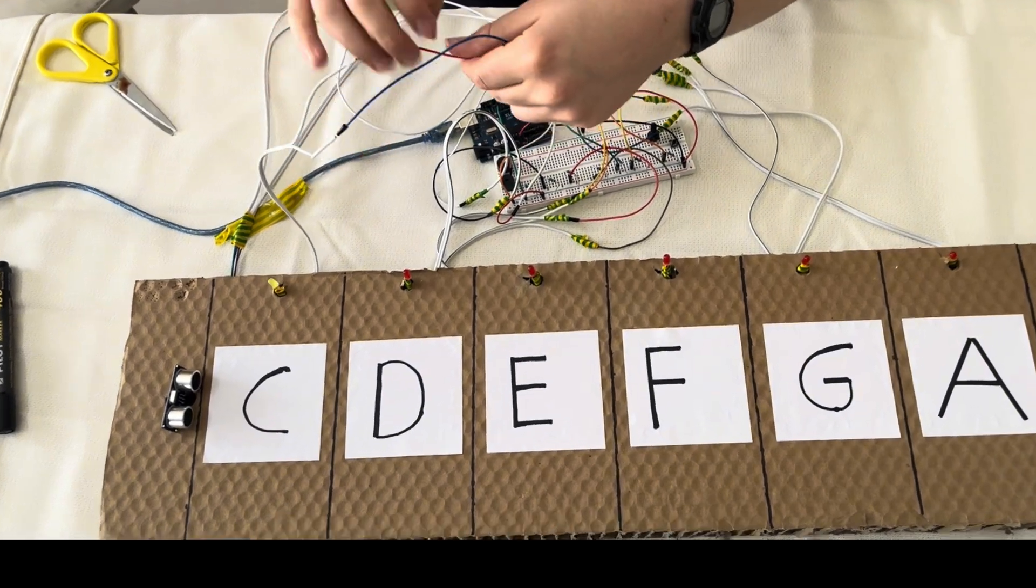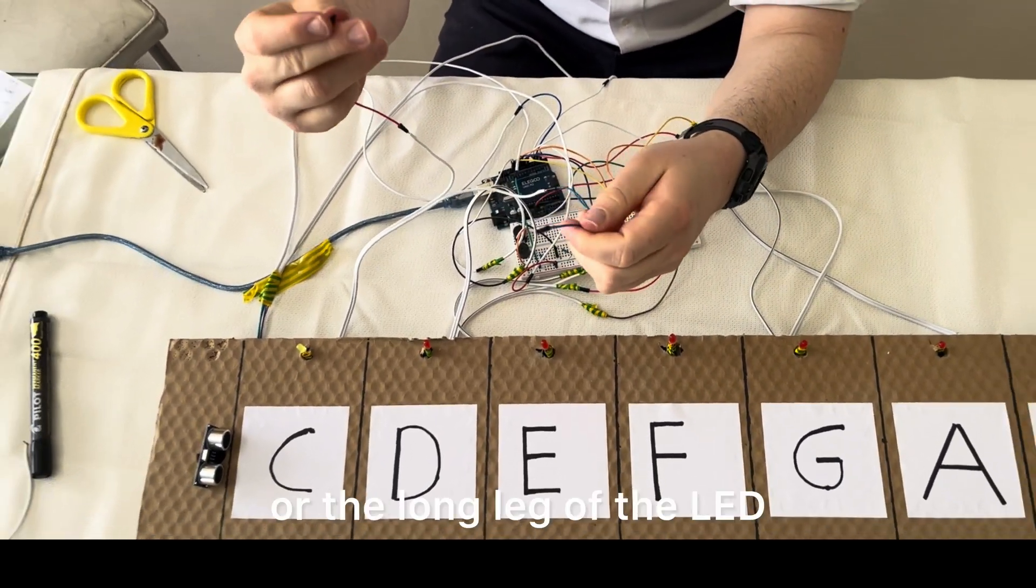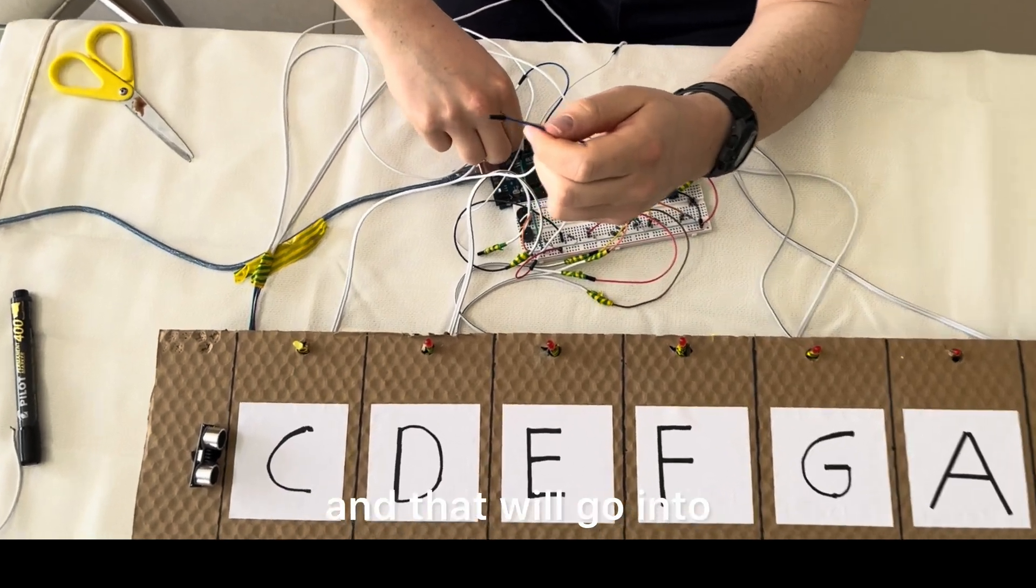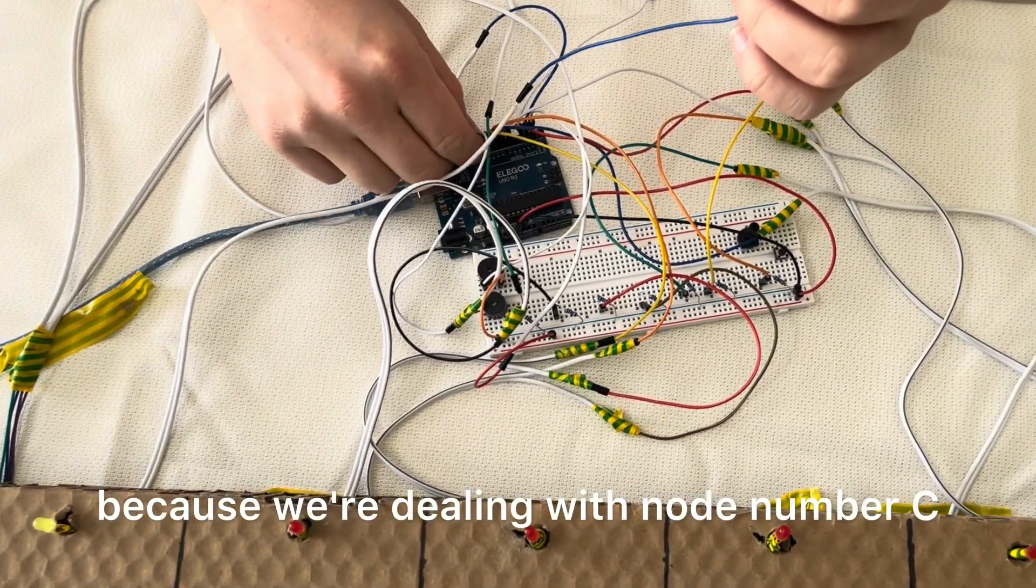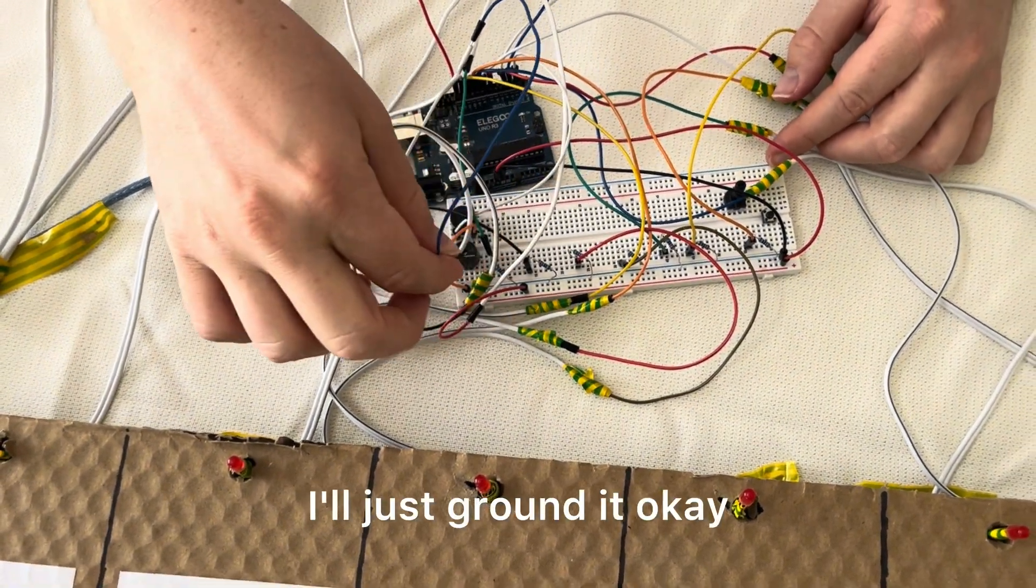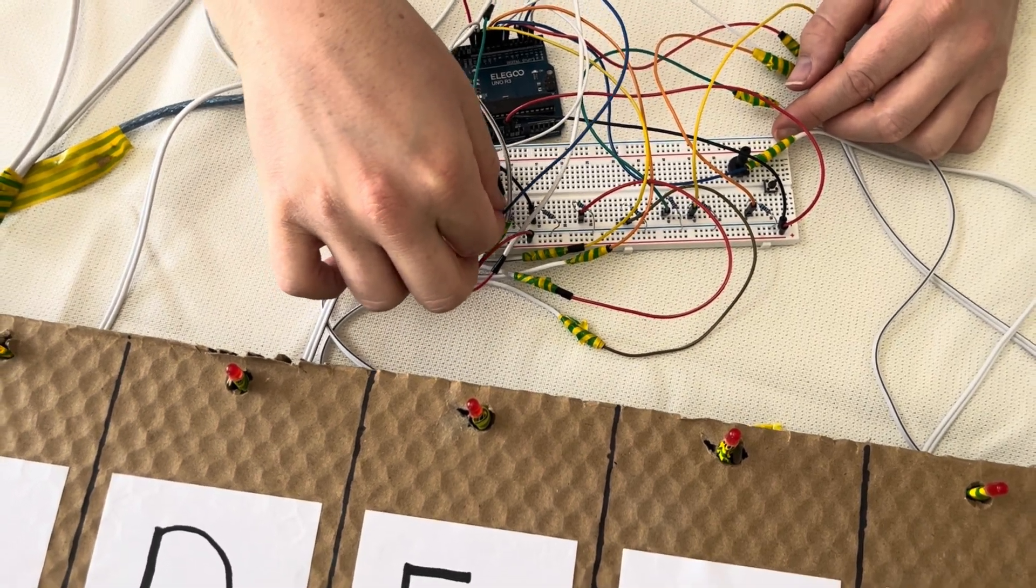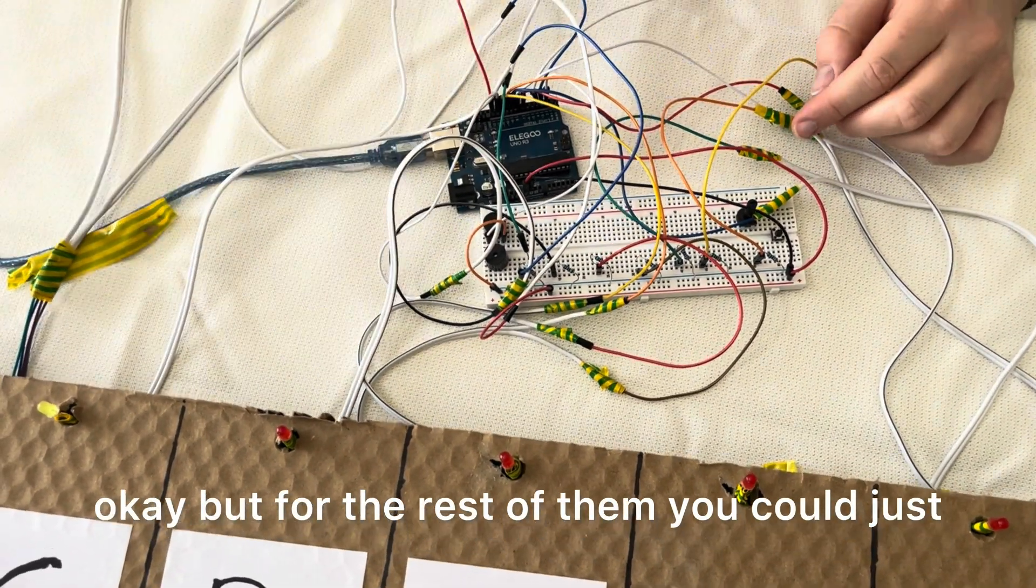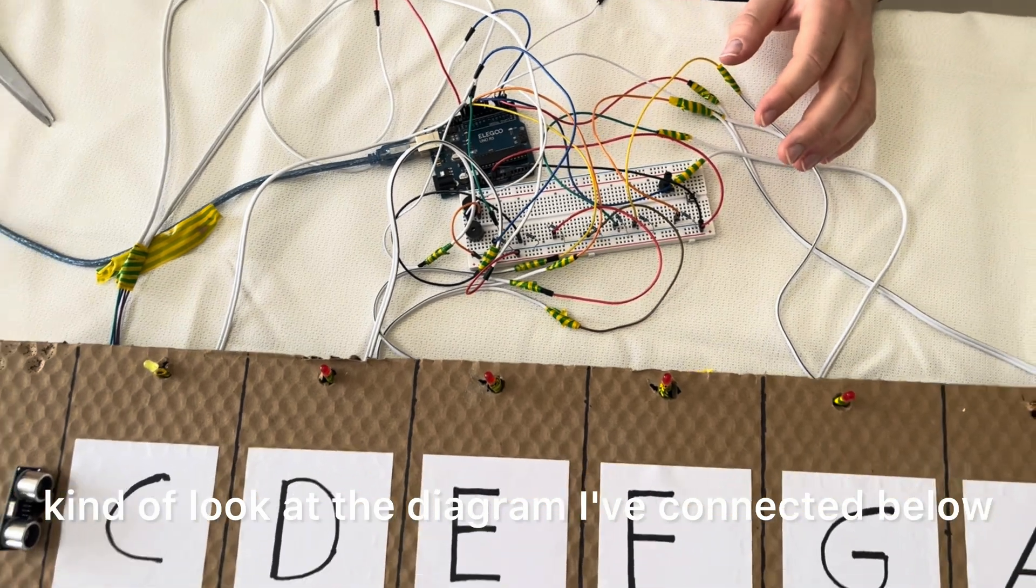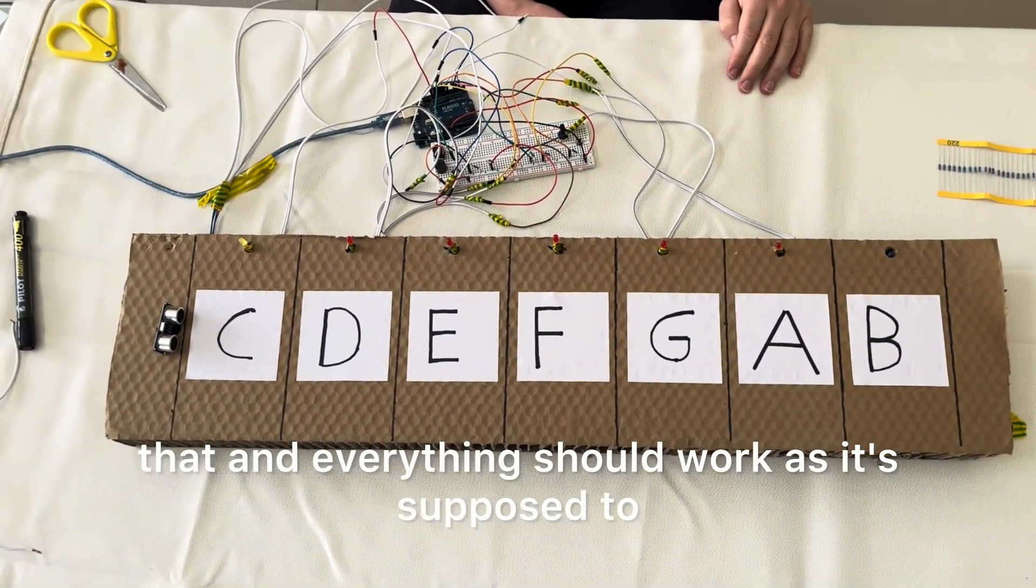Now, take the two ends. This one is the positive, or the long leg of the LED, and that will go into pin 13, because we're dealing with note number C. And the negative one, I'll just ground it. In our case, that goes here. But for the rest of them, you could just look at the diagram I've connected below, and you could just follow that, and everything should work as it's supposed to.